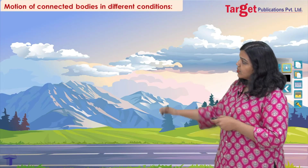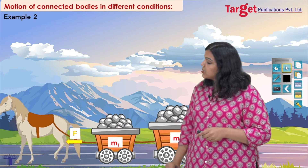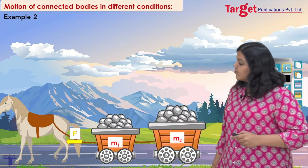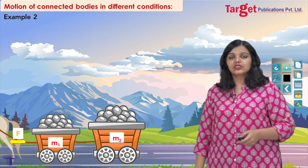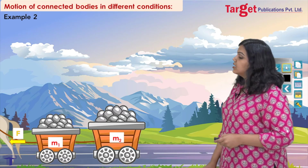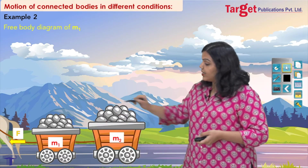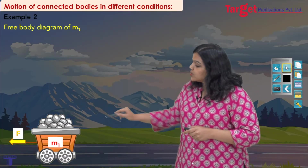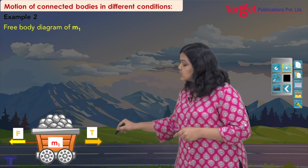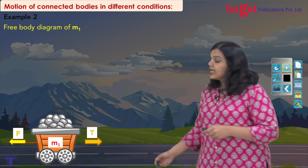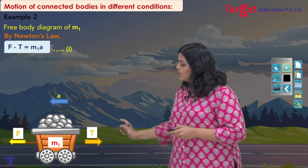Let us move on to the second example. I again have two bodies connected by a massless string, but this time the applied force is acting to the left — so it is acting on object m1. It will pull on m1 and these two objects will move together. Drawing the free body diagram of m1 first, since the externally applied force acts on m1: the force on m1 towards the left is the externally applied force, and the force acting to the right is the tension due to the string. Applying Newton's law: F minus T equals m1a.